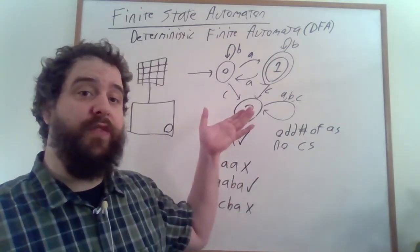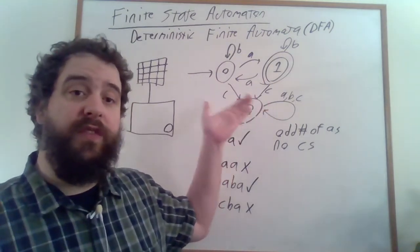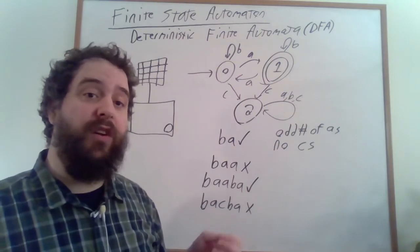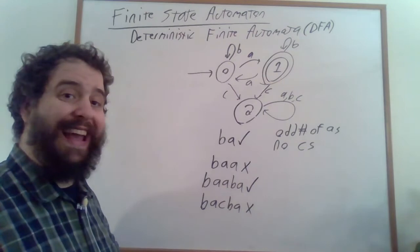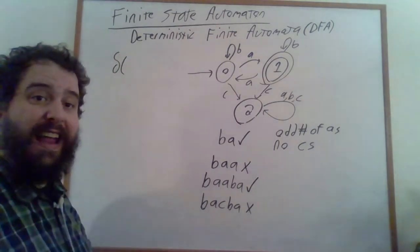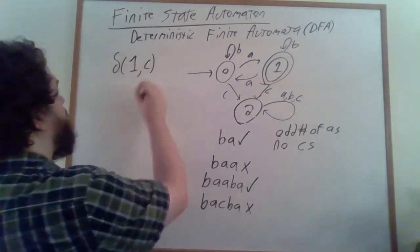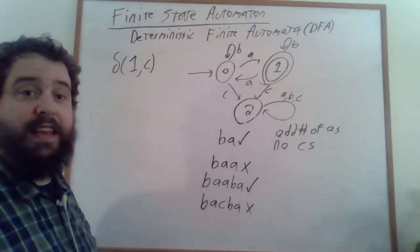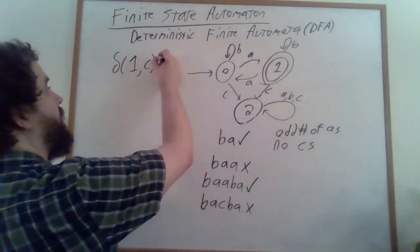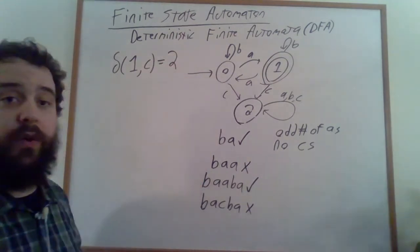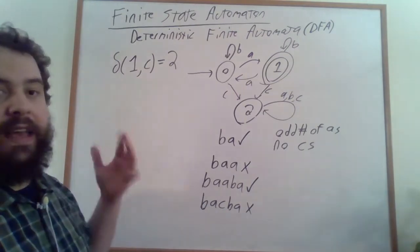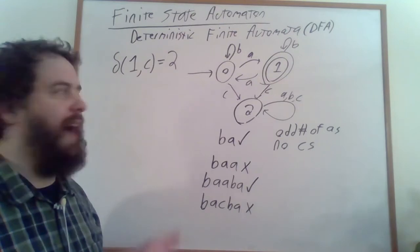There's actually another way of keeping track of these finite state automata. These state diagrams are really useful visually, but if we wanted a more algorithmic presentation, we could do it in terms of what are called transition functions. We typically use the letter lowercase delta to indicate our transition function, and this is going to be a function that takes in two inputs: the current state and the input character. So if we're in state 1 and we type the character C into our machine, we wind up in state 2, so the output of the function on this input should be 2.